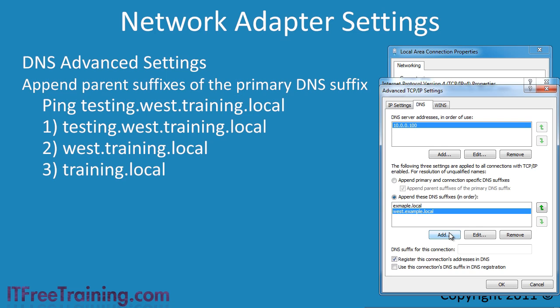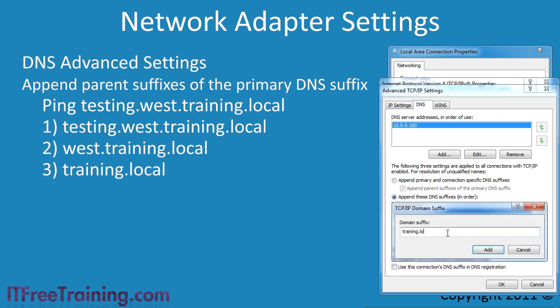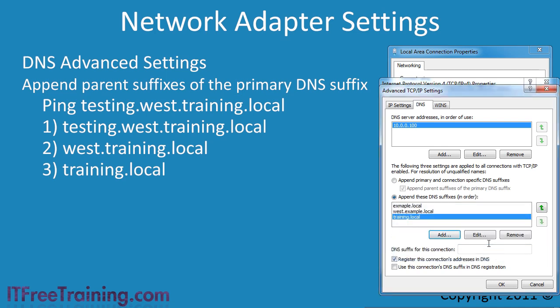I could even add additional DNS suffixes such as training or testing networks. The next option, DNS suffix for this connection, allows you to set which DNS suffix you want to use for this connection. By default, the domain name will be used. But for example, just say you had a wireless access point — you may want to call it wireless.example.local, or if using a VPN connection, give it a special name.